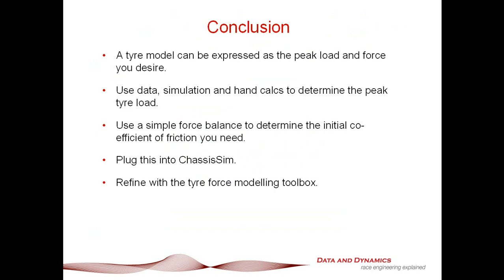So, in summary, the great thing is a tire model using the second order fit of the traction circle radius versus load characteristic can be expressed as the peak load and the force that you desire. You use data and simulation or hand calcs to determine the tire load. What you do is totally up to you. You then use a simple force balance to determine the initial coefficient of friction that you need and once you've got this, you plug this into ChassisSim, run some basic sims and use the Tire Force Modeling Toolbox to fill in the rest. That, ladies and gentlemen, is your game plan about how you create tire models from scratch and this is now being used in, this has now been applied in the ChassisSim community for the last couple of months and the results have been quite stunning.